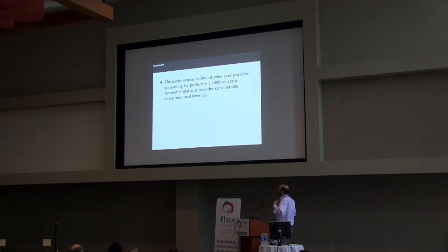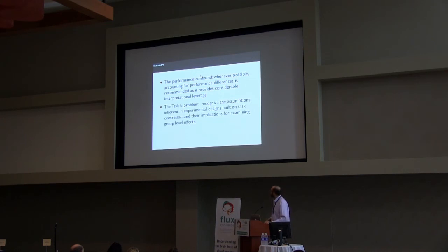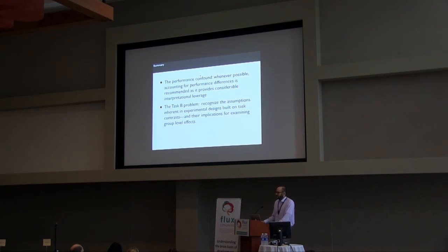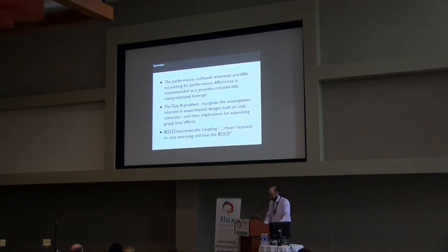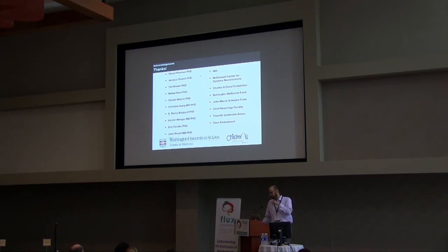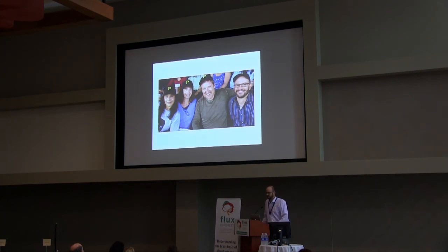So in summary: for the performance confound, whenever possible, accounting for performance differences is recommended as it provides considerable interpretational leverage. For task B, just recognize the assumptions inherent in experimental designs built on task contrasts and their implications for examining group-level effects. And for the BOLD and vascular effect, I'll pull out an old film reference — how I learned to stop worrying and love the BOLD. Thanks to a number of people who over the past decade contributed to the work I presented, and to my Flux friends — thank you very much.